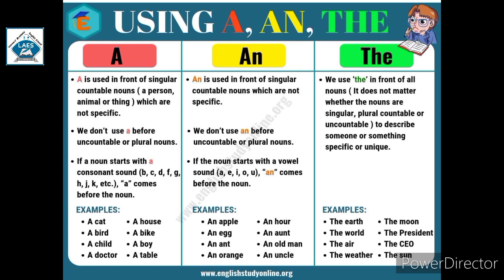If a noun starts with a consonant sound — consonant sounds are apart from vowels, that is A, E, I, O, U — we use A. For example: a cat, a bird, a child, a doctor, a house, a bike, a boy, a table, etc.